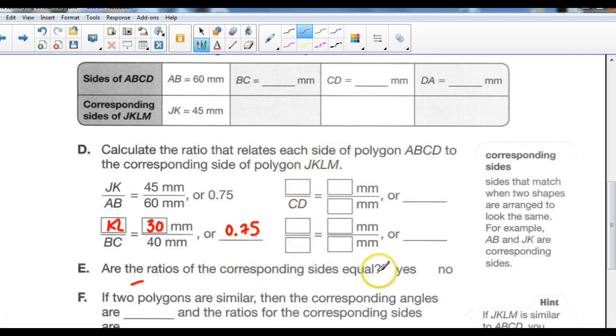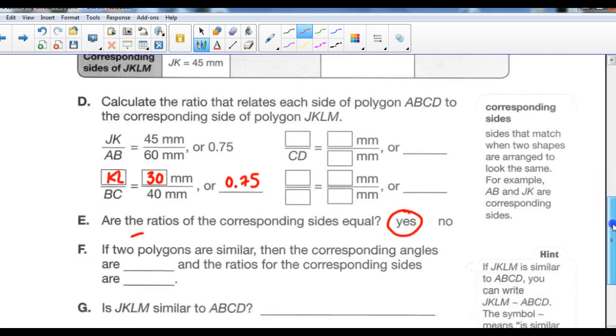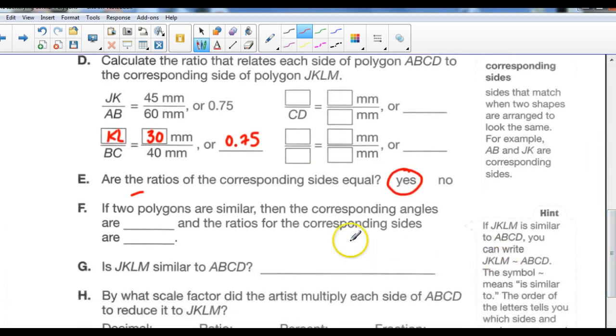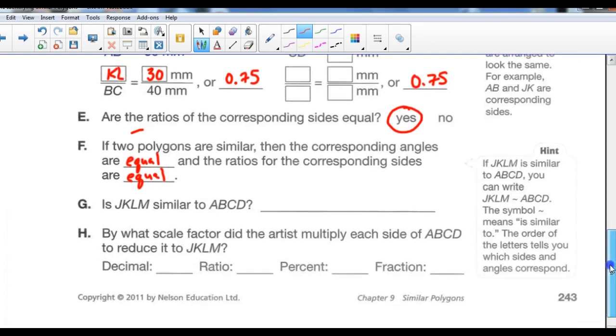Are all the ratios of the corresponding sides equal? Well, when you do it, yes, they should be. If the two polygons are similar, then corresponding angles are equal, and the ratios for the corresponding sides are also equal. The ratios have to be the same. So this also must equal 0.75, and this also has to equal 0.75. So measure carefully when you're doing this.